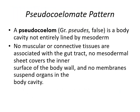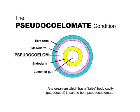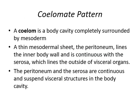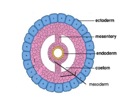Pseudocoelomates have a false body cavity lined by mesoderm on only one side — no muscular connective tissues are associated with the gut, no mesodermal sheet covers the inner surface of the body wall, and no membranes suspend organs in the body cavity. In the diagram, mesoderm lines only the ectoderm side, and the white space is the pseudocoelom. In coelomates, the body cavity is completely surrounded by mesoderm, and a thin mesodermal sheet called the peritoneum lines the inner body wall and is continuous with the serosa, which suspends structures in the body cavity.